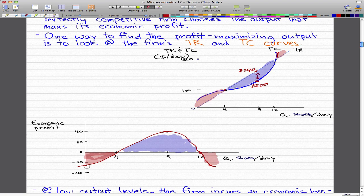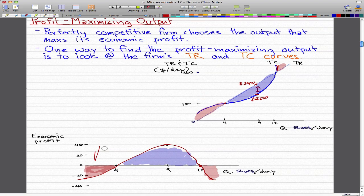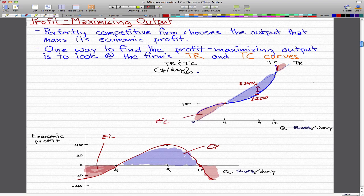So this would be our economic loss, and I'll just abbreviate it to save me some writing. This is our economic loss and this is our economic profit. Now similarly, this is our economic loss and this is also economic loss, and this is economic profit.